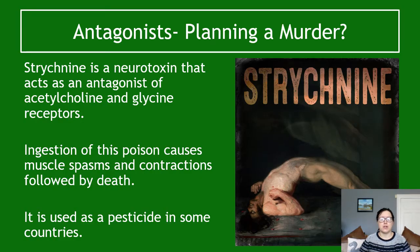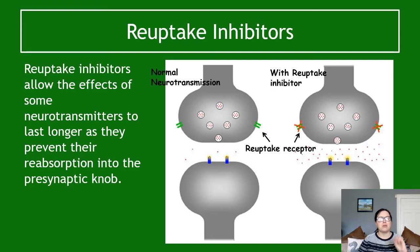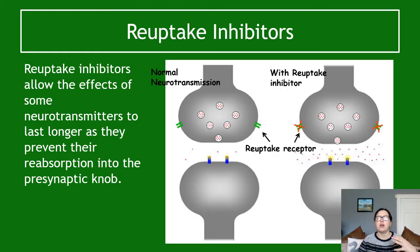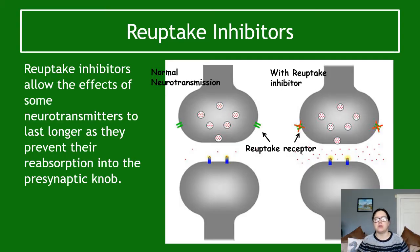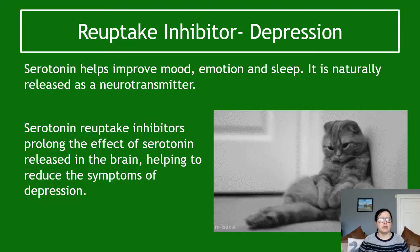Reuptake inhibitors are category three. They allow the effects of neurotransmitters to last longer by preventing their reabsorption. In the diagram on the left, the reuptake channels are open so the neurotransmitter is reabsorbed into the presynaptic neuron. On the right, the reuptake inhibitor has blocked the reuptake receptor, so far more neurotransmitter molecules remain in the synaptic cleft, meaning more stimulation of that pathway.